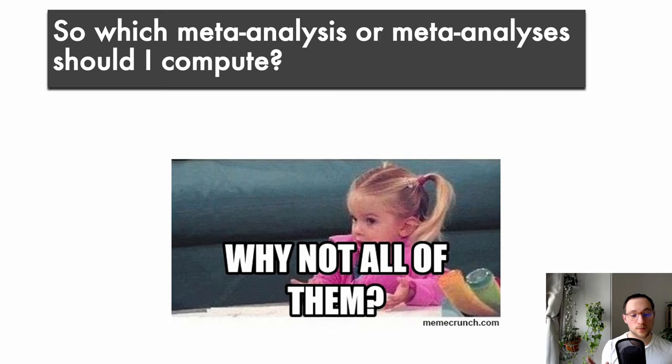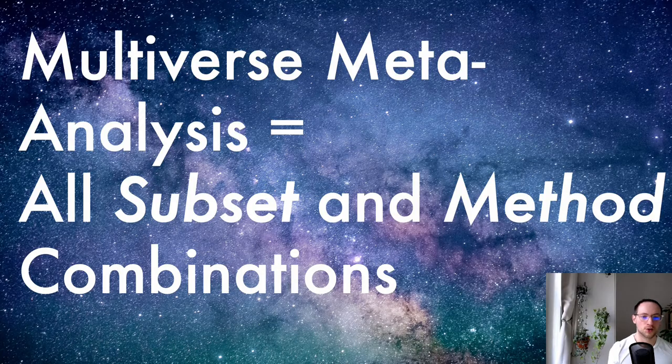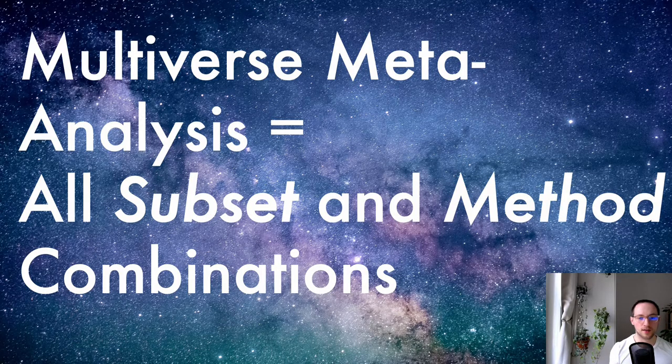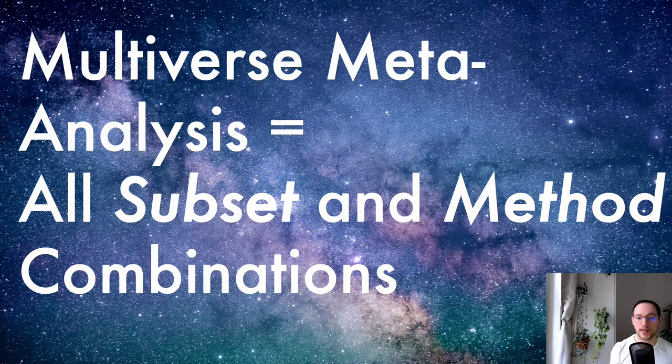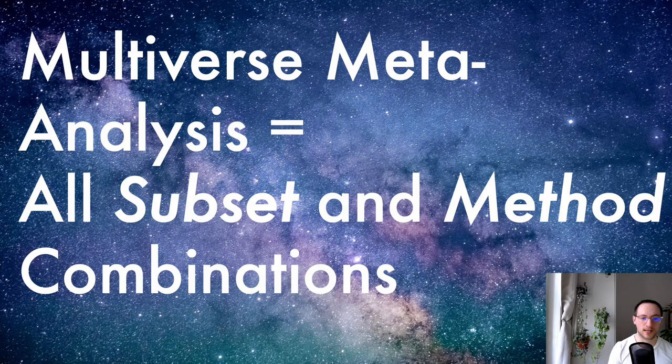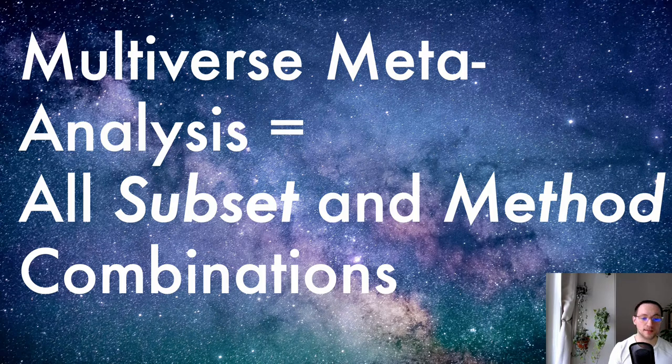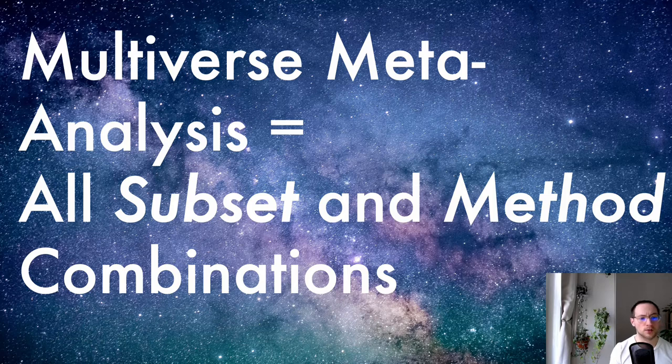So which meta-analysis or meta-analyses should I compute? Multiverse meta-analysis would suggest why not all of them? So the multiverse of meta-analyses for a given research question, the multiverse meta-analysis, is basically the combination of all possible study subsets and all available statistical and meta-analytical methods. Let me break this down for you a little further.